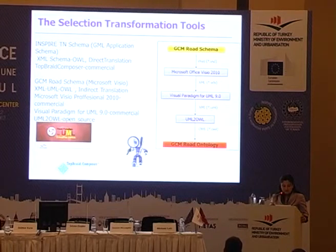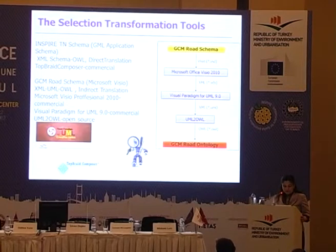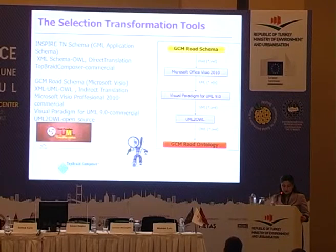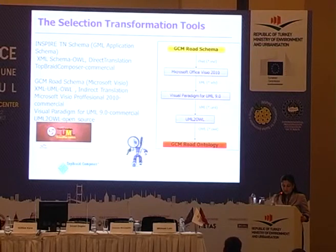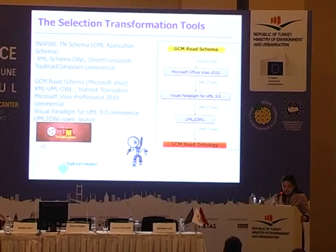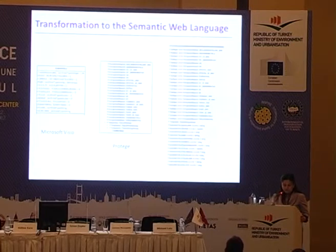The GCM road schema is converted from XML to UML and then from UML to OWL via indirect translation. The GCM road schema is in Microsoft Office Visio format. Visual Paradigm for UML is used, taking XML as input and producing XMI as output. Then UML to OWL takes XMI as input and produces the GCM road ontology as output.